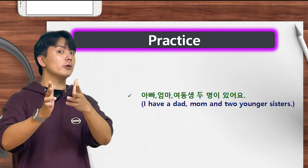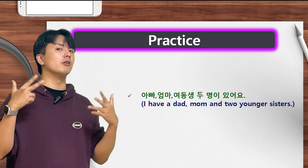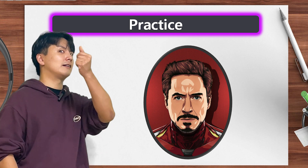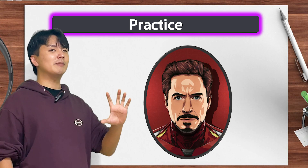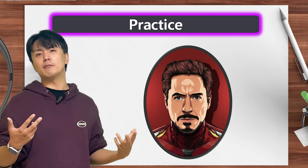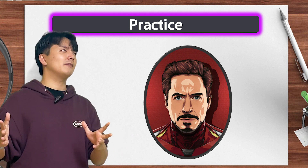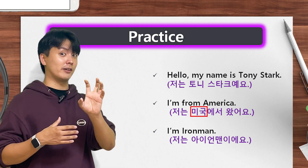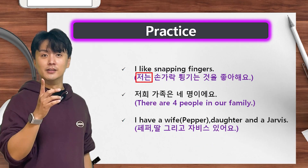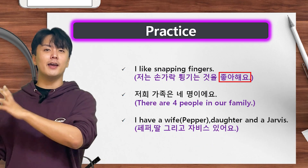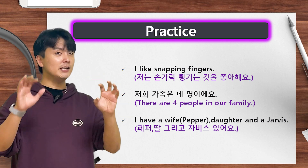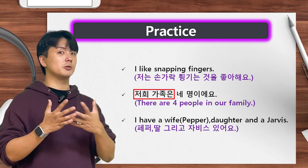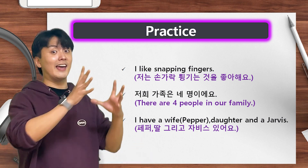Okay, so before you introduce yourself, let's practice with a fictional character we all know. Hello, my name is Tony Stark. I'm from America. My job — I am Iron Man. My hobby is snapping fingers. Our family has four members: me, one daughter, and one Jarvis. Does AI count as family? Let's just say yes. So: 저는 Tony Stark 예요. 저는 미국에서 왔어요. 저는 Iron Man이에요. 저는 손가락 튕기는 것을 좋아해요 — 튕기다 means 'to snap,' so 손가락 튕기다 means 'to snap your finger.' 저희 가족은 네 명이에요 — Pepper, 딸 (daughter), 그리고 (and) Jarvis 있어요.